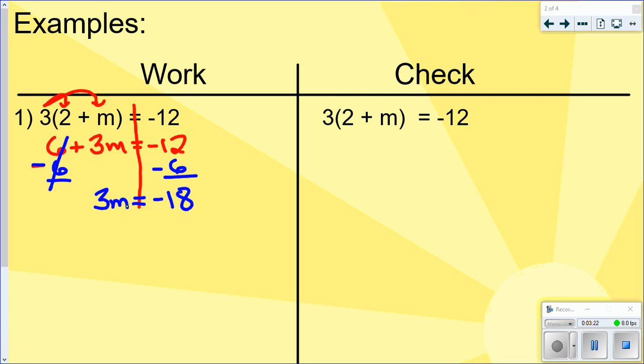I have 3 times m, so to get rid of the 3, I do the opposite and divide by 3. Those will cancel out because 3 divided by 3 is 1. And negative 18 divided by 3 is negative 6.